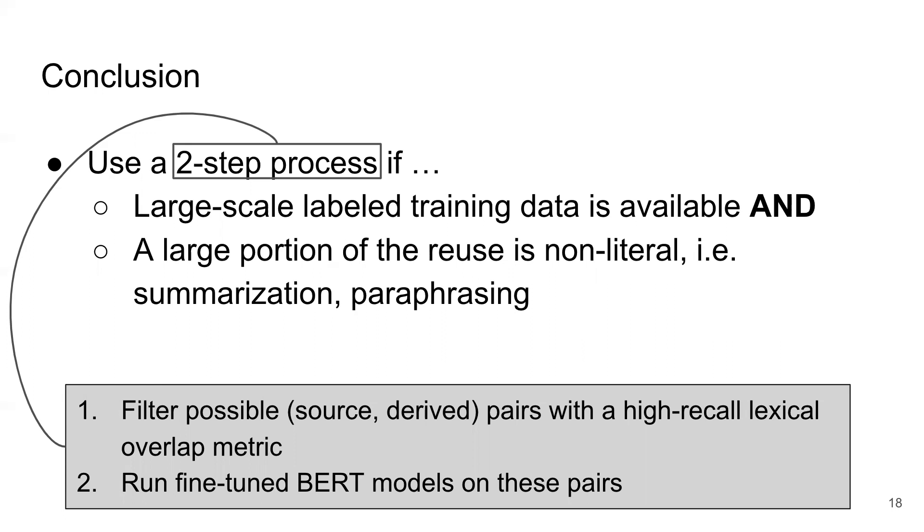If you have a really large dataset then it might be useful to filter possible pairs with a lexical overlap metric such as TF-IDF and then run your more expensive fine-tuned BERT model just on those filtered pairs. But if your dataset's a lot smaller then you could just apply the fine-tuned BERT on the whole dataset.